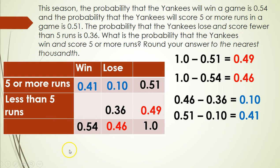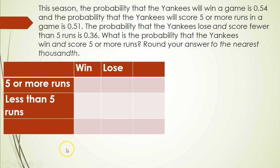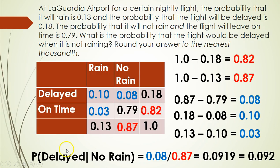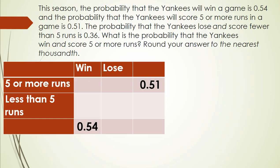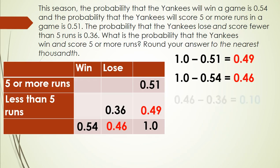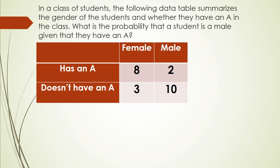The prior question was a conditional. It asked: what is the probability that the flight would be delayed when it's not raining? That's like saying 'given that it's not raining.' So be careful — watch for the word 'when' or 'given' to identify a conditional probability, and watch for 'and' to identify an intersection that's just an inner box value.